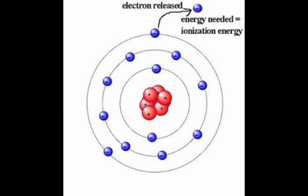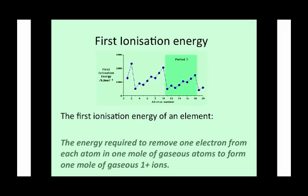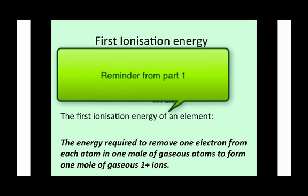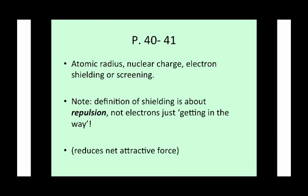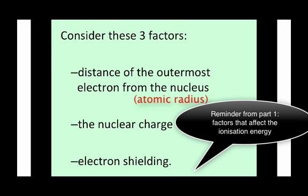We're looking at the ionisation energy of an atom and how it gives us evidence for the shell structure of an atom. The first ionisation energy of an element is the energy required to remove one electron from each atom in one mole of gaseous atoms to form one mole of gaseous one-plus ions. The three factors are atomic radius, nuclear charge, and electron shielding.